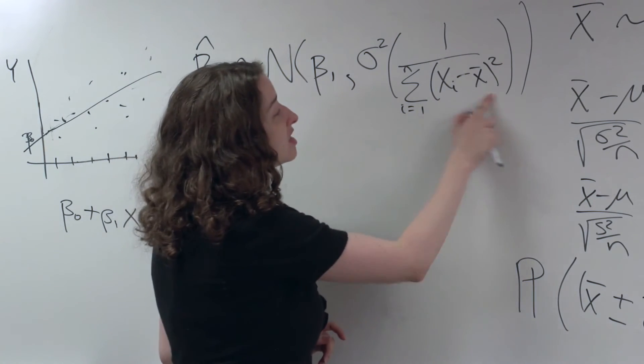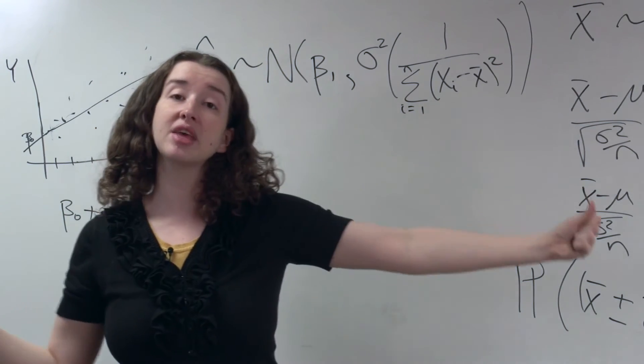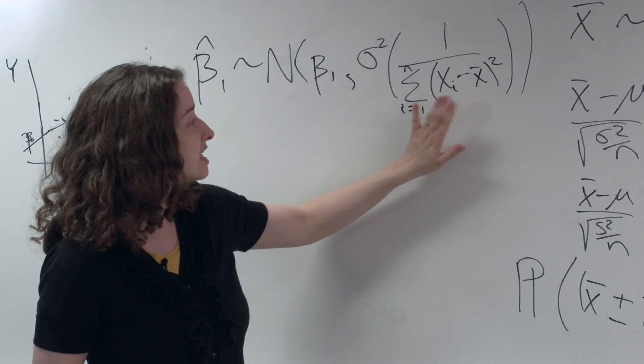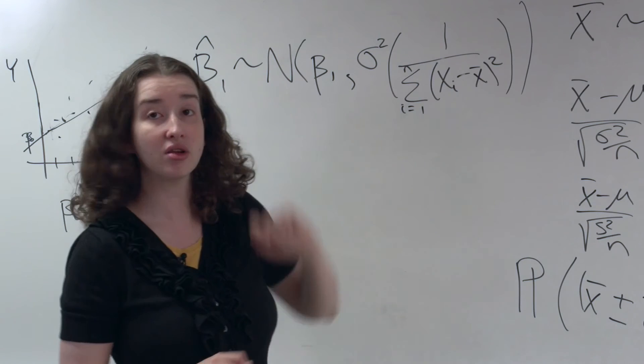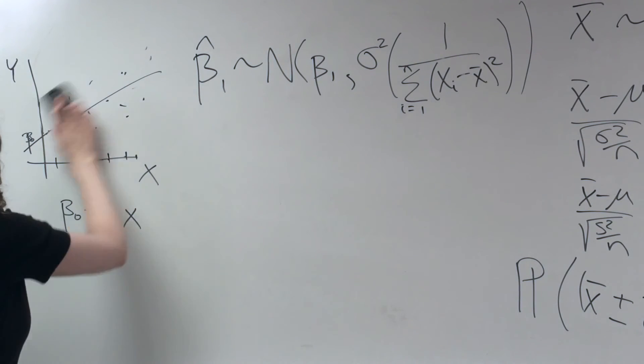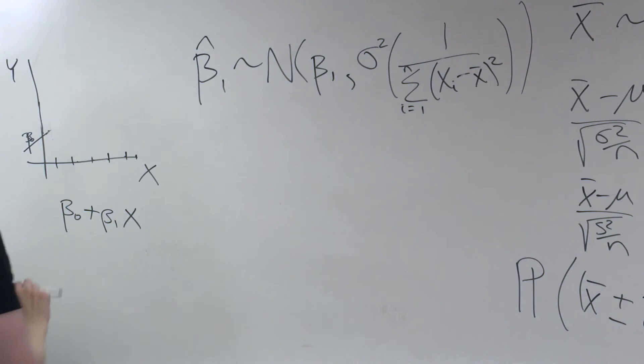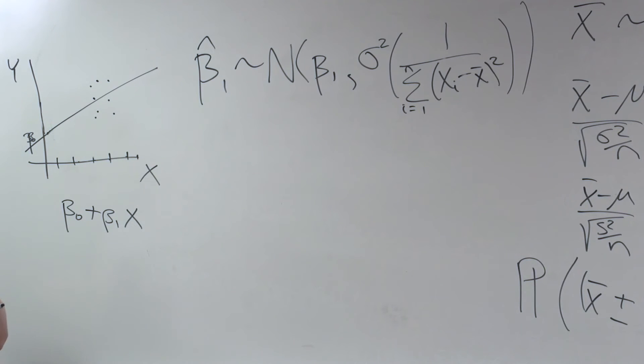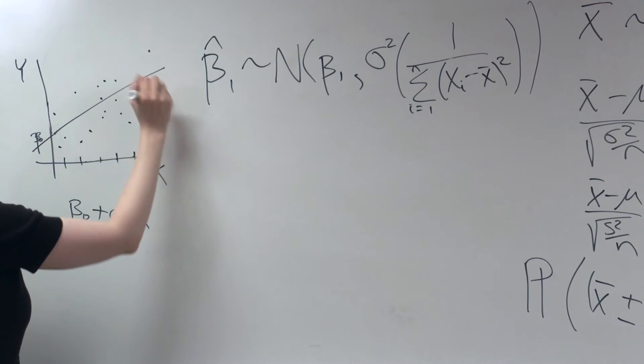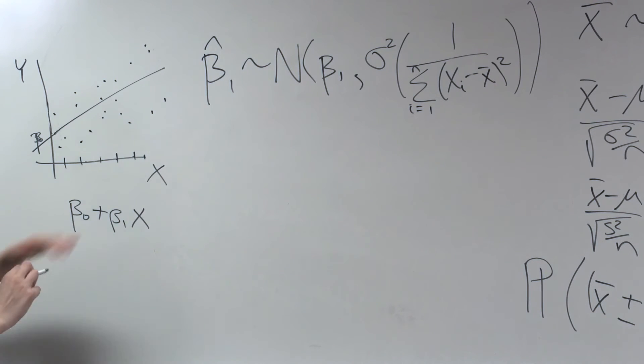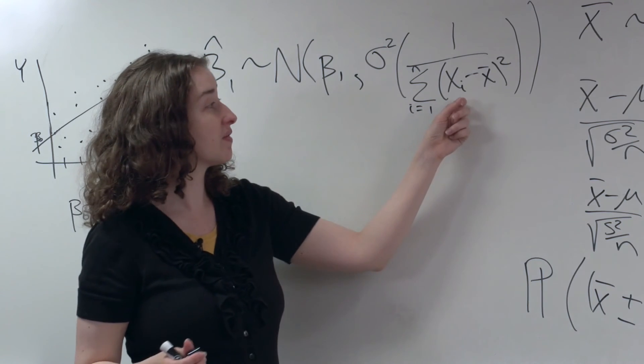What else? This quantity here reflects how spread out the x's are. So what this says is, the more spread out the x's are, the bigger the denominator, the smaller the entire quantity. If I'm trying to estimate the slope, but I only have points for a couple values of x, it's going to be kind of hard to estimate that slope. But if I have data points for a big variety of values of x, really spread out x's, I'm going to get a better estimate of the slope. And that's what this quantity here reflects.